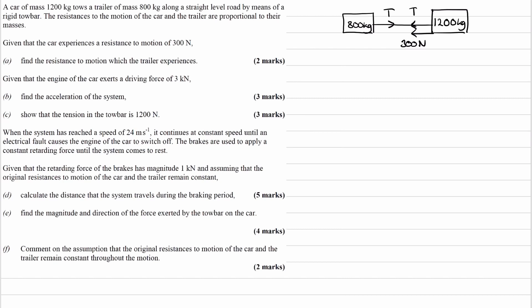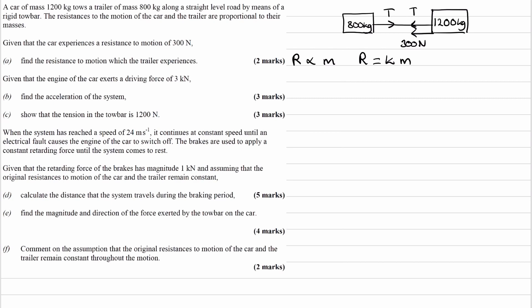We know the resistances to motion are proportional to mass. We can write down an equation: resistance is proportional to mass, which means resistance equals some constant K multiplied by mass. You can change the proportionality symbol into an equals sign if you introduce a proportionality constant. But we don't know what K is, so we use the resistive force on the car — 300 equals K times 1200. Rearranging, K equals 1 over 4.